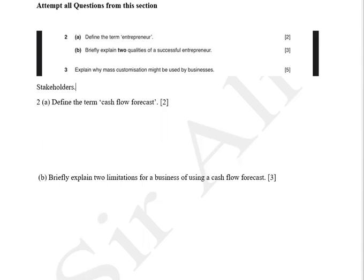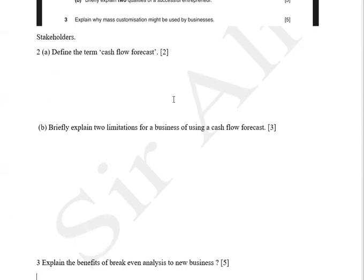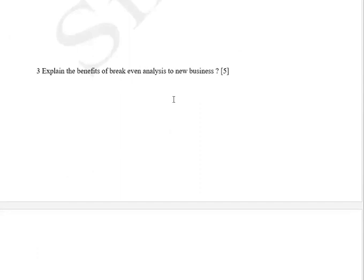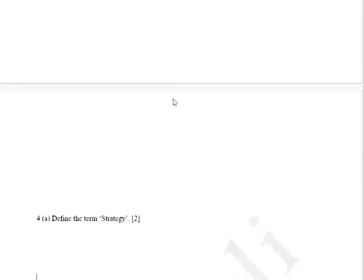Two and three marks questions related to stakeholders, then one question of five marks related to customization — how customization might be used for businesses. Then question number two: define the term cashflow forecast, two limitations of a business using a cashflow forecast, then explain the benefits of break-even analysis to a new business.